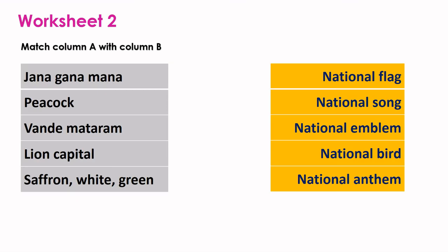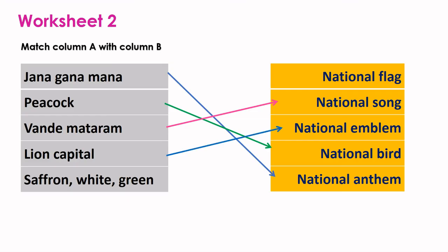Match column A with column B. Jana Gana Mana is our national anthem. Peacock is our national bird. Vandemataram is our national song. Lion Capital is our national emblem. Saffron, white, and green are the colors in our national flag.